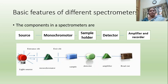Then we have a sample holder, a detector, and an amplifier and recorder. So this is the light source — for different spectrometers we use different light sources. We have a monochromator where only light of one wavelength is obtained, which is then passed through the sample, detected, amplified, and finally recorded.